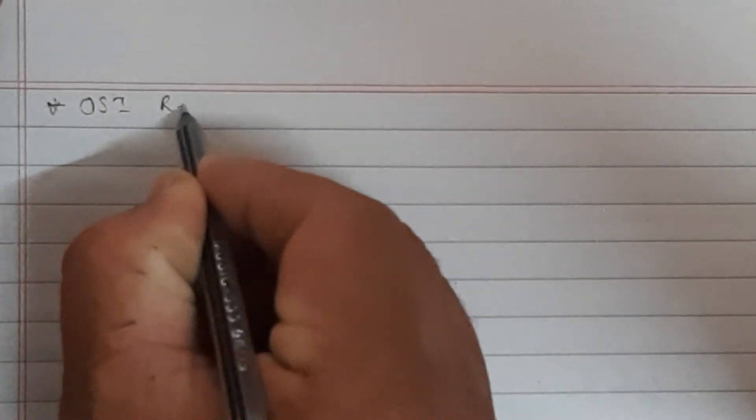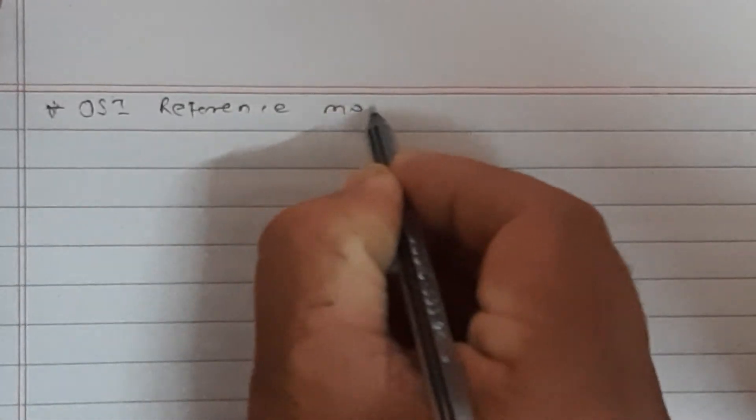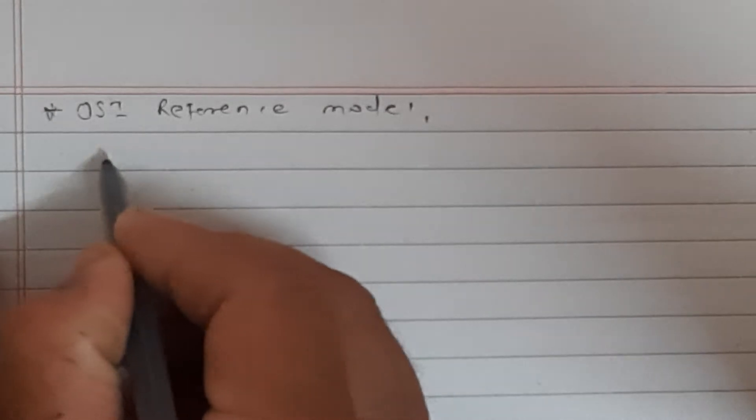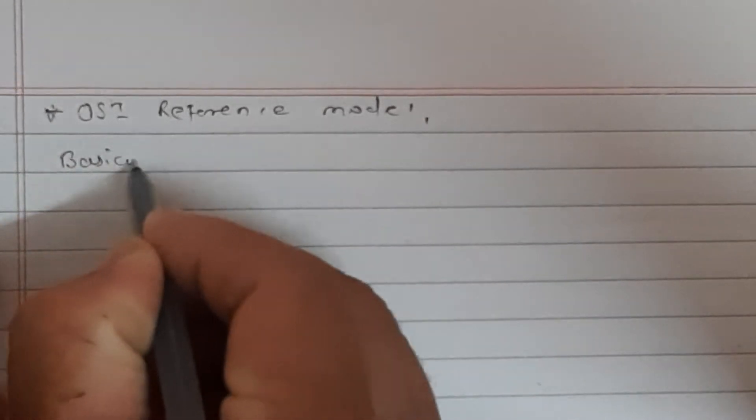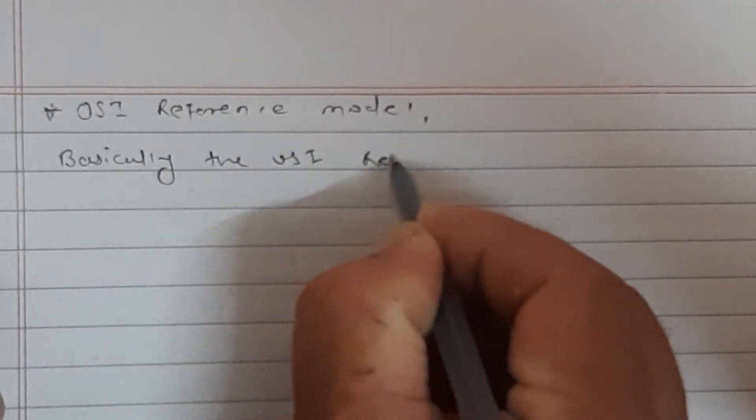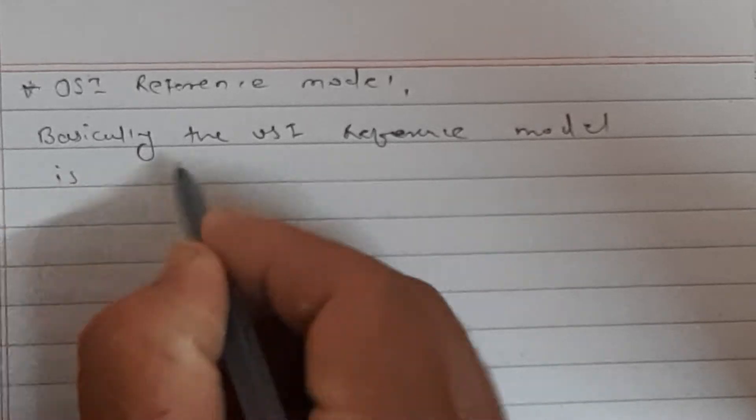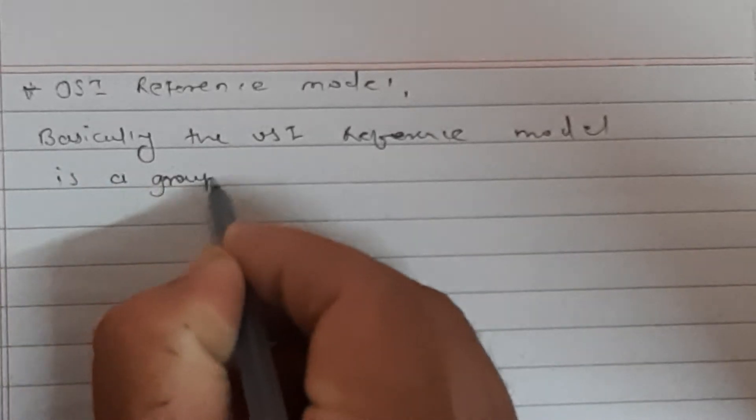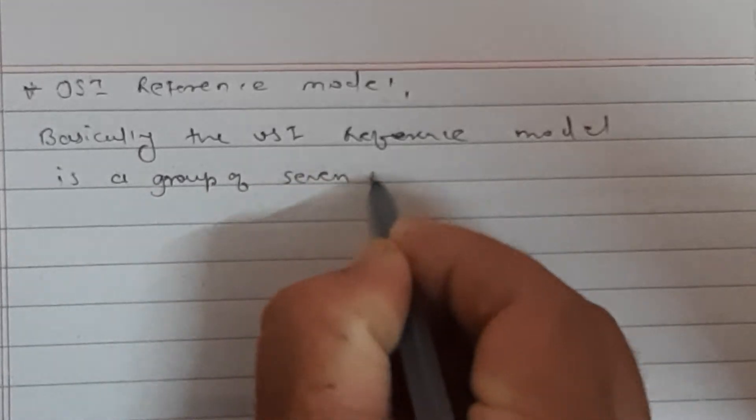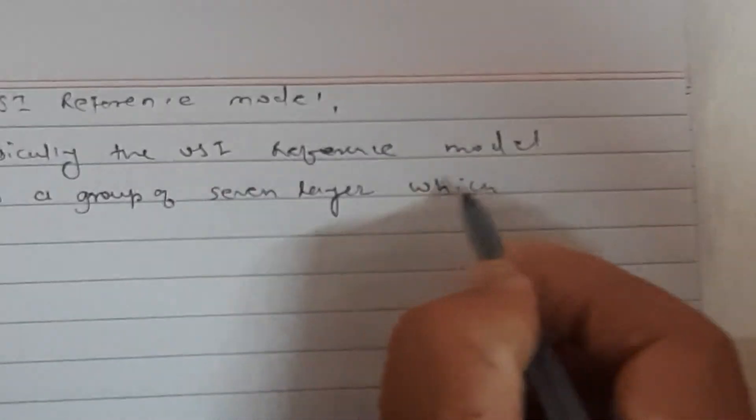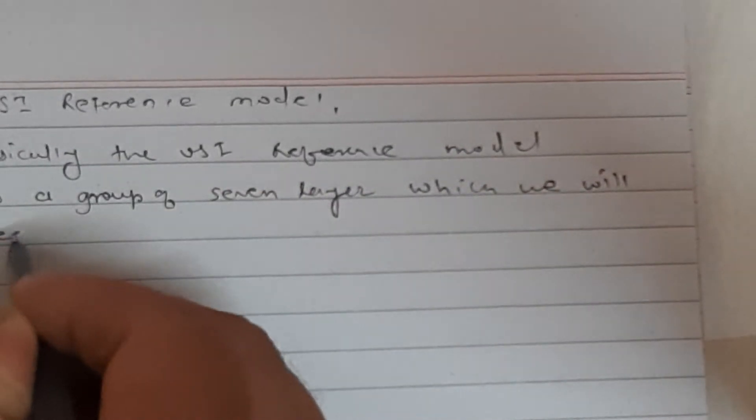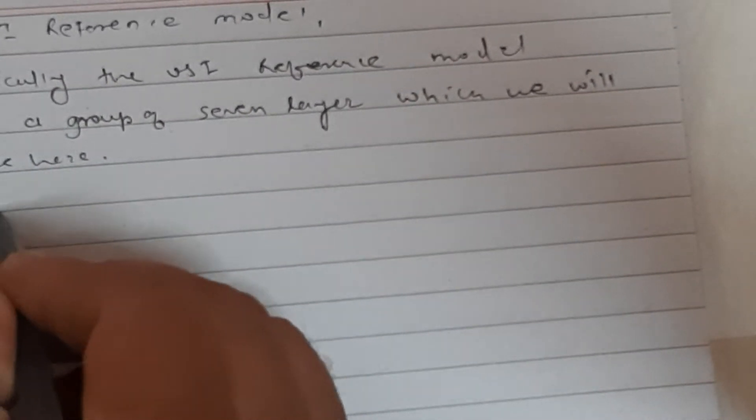Hi friends, today we will start the topic OSI reference model. Basically, the OSI reference model is a group of seven layers which we will see here.